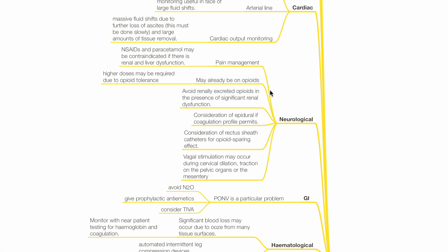Neurological. Pain management. NSAIDs and paracetamol may be contraindicated if there is renal and liver dysfunction. The patient may already be on opioids and due to opioid tolerance may require higher doses. Avoid renally excreted opioids in the presence of renal dysfunction. Consider epidural analgesia if coagulation profile permits or rectus sheath catheters for opioid-sparing analgesia.